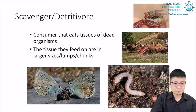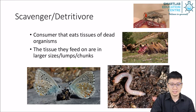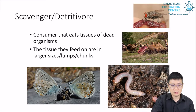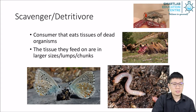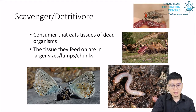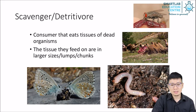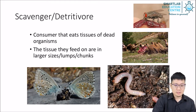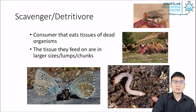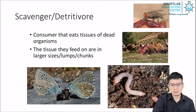Another type of consumer rarely discussed are the scavengers and detritivores. These are animals that consume tissues of dead organisms. You may already be familiar with some of these — vultures, flies — but they are not the only ones. For example, ants, cockroaches, earthworms. These are consumers that feed on dead material, but make no mistake, they still consume organic material.